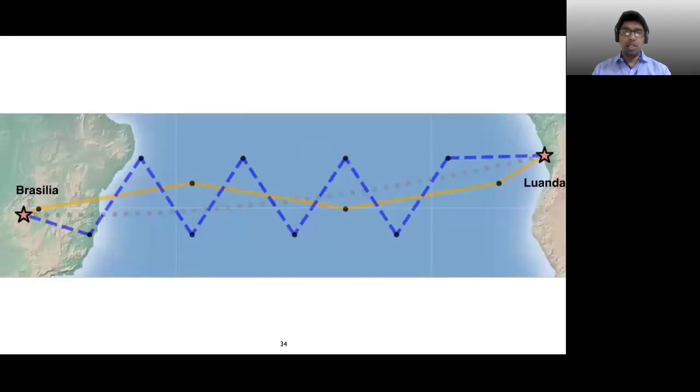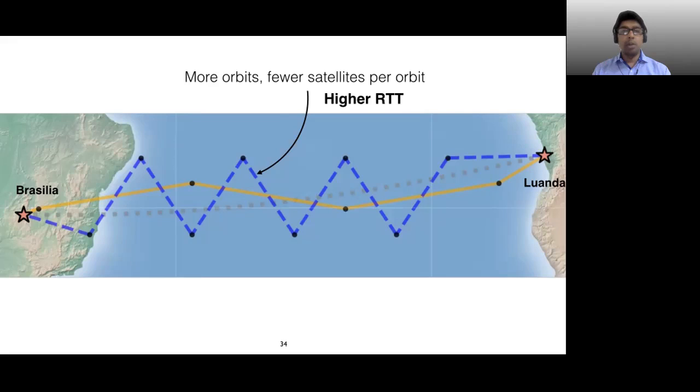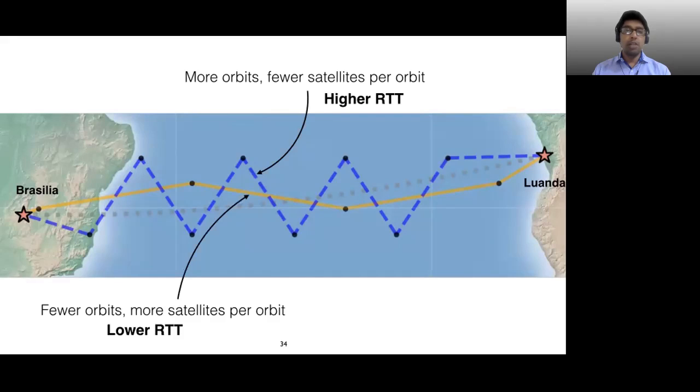Here is some further explanation on this. The blue dashed line shows the path between Brasilia and Luanda using a constellation which has many orbits and fewer satellites per orbit, like Starlink's first shell consisting of 72 orbits and 22 satellites per orbit, thus resulting in higher RTTs due to the zigzag pattern, which is an artifact of plus grid connectivity. The yellow line shows a path using a constellation built with the same number of satellites, but having fewer orbits and more satellites per orbit. This path has lower RTT.